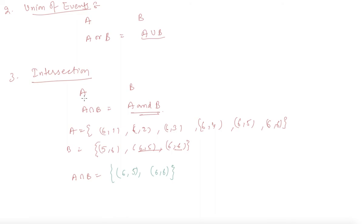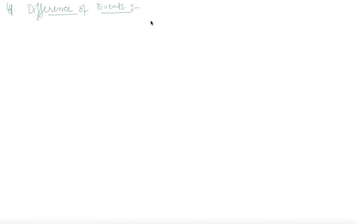Now let's discuss the difference of events. Difference of events A and B is defined by A minus B, which is also defined by A intersection B complement.